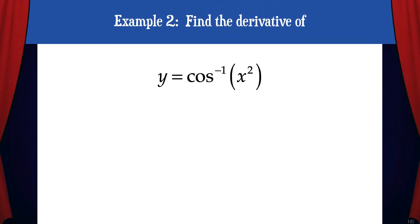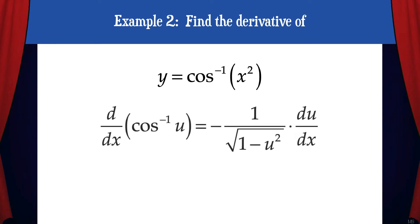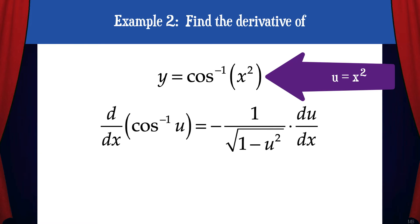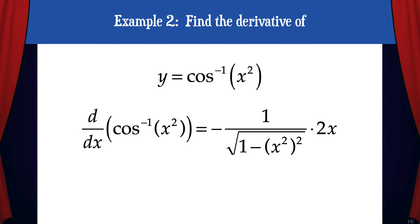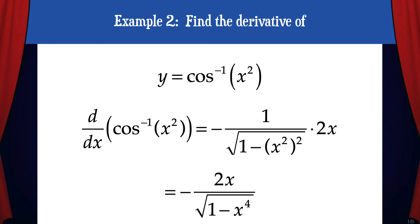Example 2: Find the derivative of y equals cosine inverse of x squared. To solve this, let's use the template for the derivative of cosine inverse u, which is negative 1 over the square root of 1 minus u squared times du/dx. In this case u equals x squared, so when we substitute into the template we get negative 1 over the square root of 1 minus the quantity of x squared squared times 2x by the chain rule. This simplifies to negative 2x over the square root of 1 minus x to the fourth, and that's the derivative.